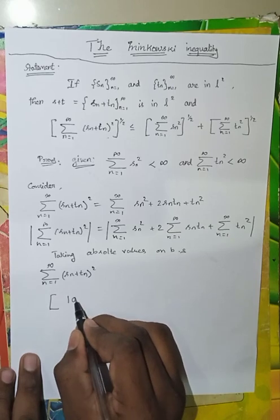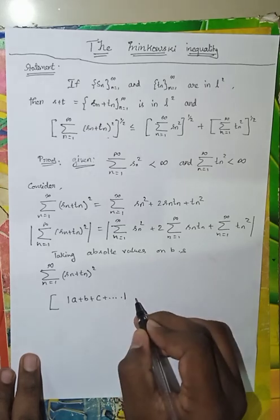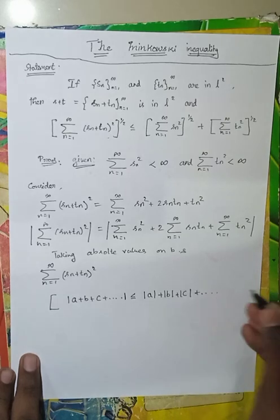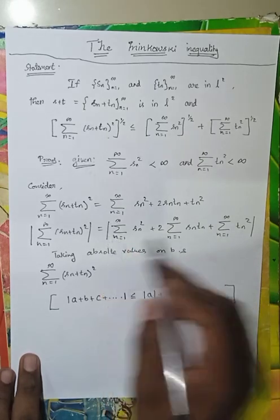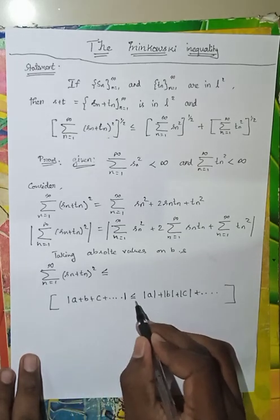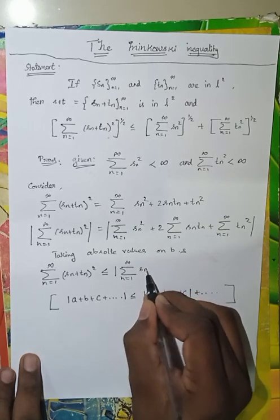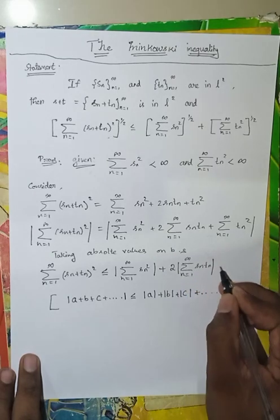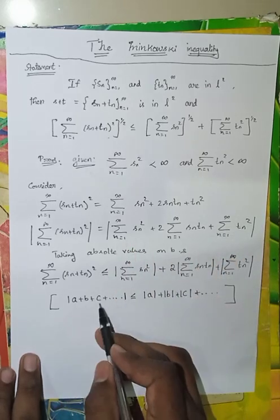By the triangle inequality, with three terms a, b, c, |a + b + c| is less than or equal to |a| + |b| + |c|. Since there are infinitely many terms and these are real numbers, we can use this property. So summation n=1 to infinity of (Sn + Tn)² is less than or equal to summation of Sn², plus mod of summation n=1 to infinity of Sn·Tn, plus summation of Tn².